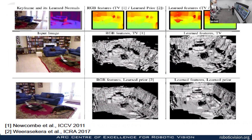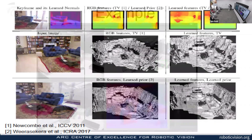Comparing results: using RGB features with TV-L1 smoothness as Richard Newcombe used, the reconstruction of this scene is fairly noisy. Using the learned surface normal prior gives something better. Using both learned features and the learned surface normal prior gives a much cleaner result — in particular, flat surfaces like desks, which have uniform brightness, are correctly reconstructed as flat, because the surface normal prior captures that uniform regions tend to be flat.